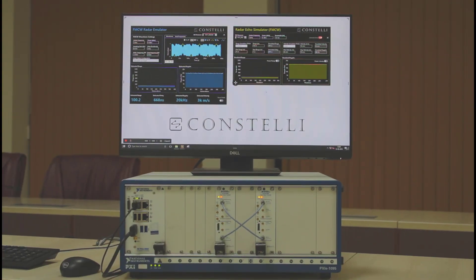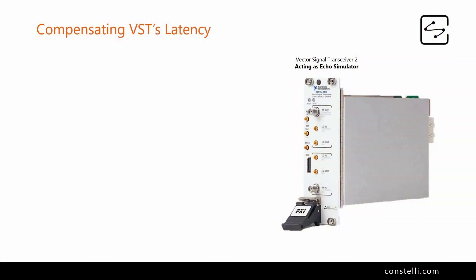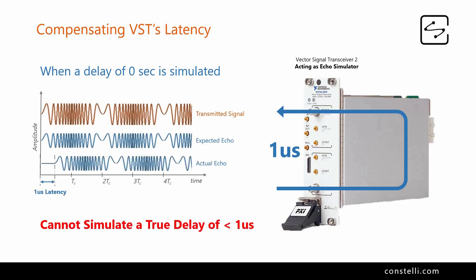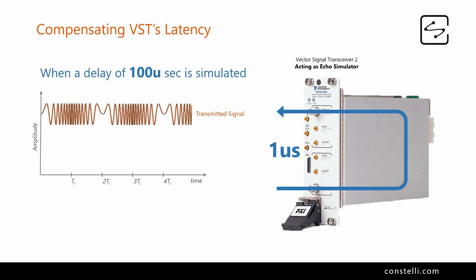The VST has a round-trip delay associated with the A-to-D and D-to-A conversions, digital signal conditioning, and processing. The round-trip delay of VST1 is close to 1.44 microseconds and that of VST2 is 1 microsecond. That is why we cannot simulate a true minimum delay of less than 1 microsecond. To simulate and process delays less than 1 microsecond, on the processing side we omit the first chirp cycle and process the echo from the second chirp cycle onwards, which means the first 100 microseconds of the TX is ignored.